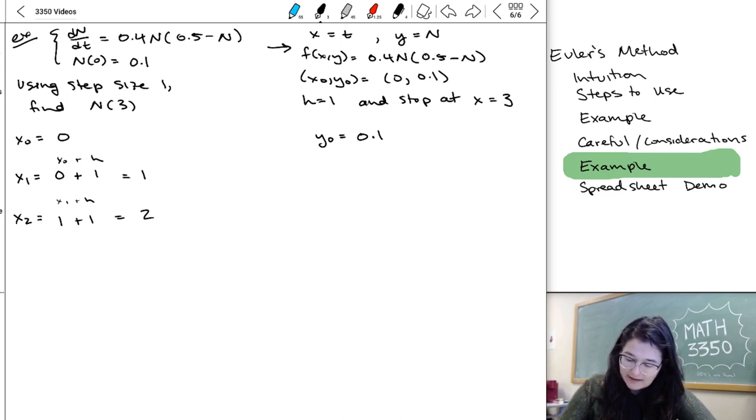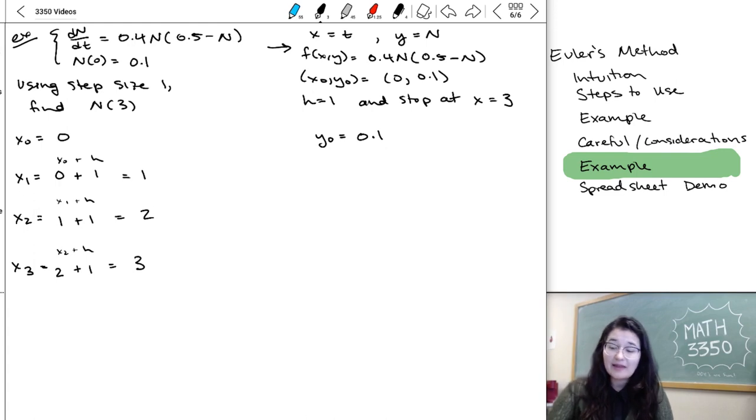And x3 is going to be x2 plus h, so that's going to be 2, was my previous x value, plus 1 gives me 3. And then at that point, I've reached the value that I want to stop at, x equal 3, and so I'm done there.